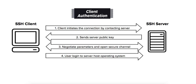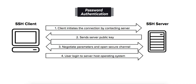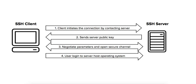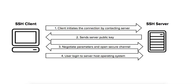For client authentication, the server authenticates the client using one of several methods. The first method is password-based authentication, in which the client sends a password over an encrypted channel. The second is public key authentication, where the server confirms the client owns the private key.